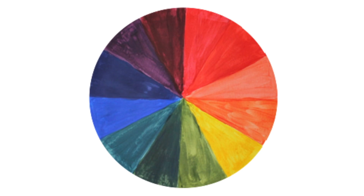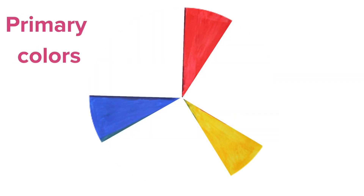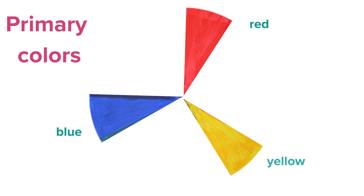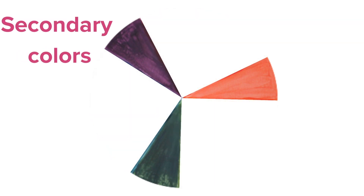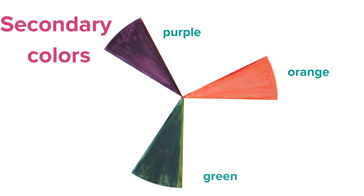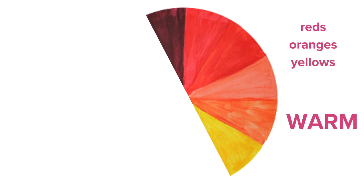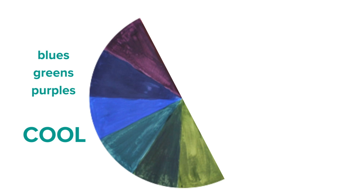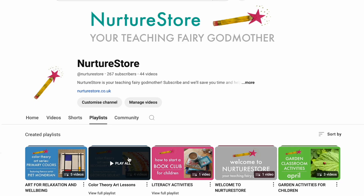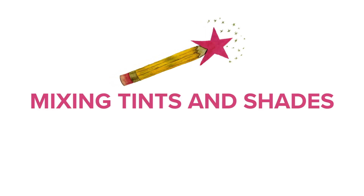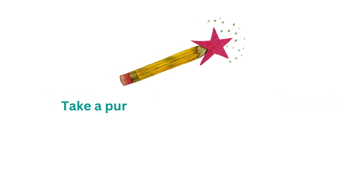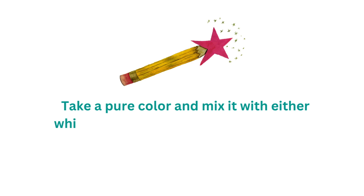Okay, so a little bit of colour theory. If you've watched my other videos in this colour theory series, you'll recognise this colour wheel. We've talked about how colours can be grouped as primary colours — red, blue, and yellow — and how to mix secondary colours — orange, green, and purple. We've also seen how the colour wheel can be split in half to make warm and cool colours. Today we're going to look at taking one of the pure colours in the colour wheel and mixing it with either white or black to create a palette of tints and shades.